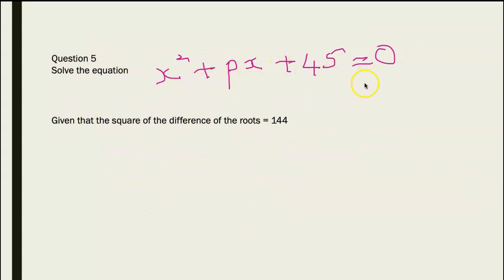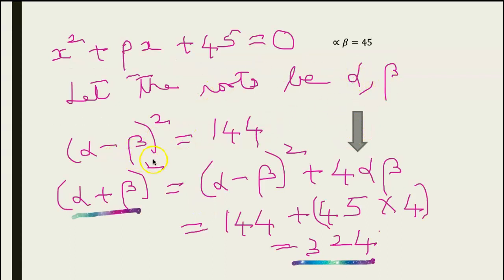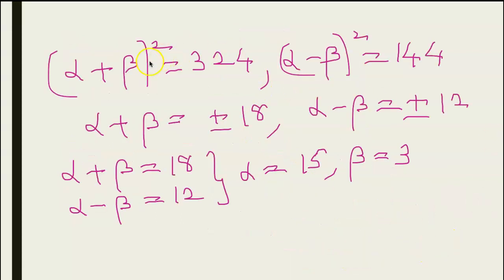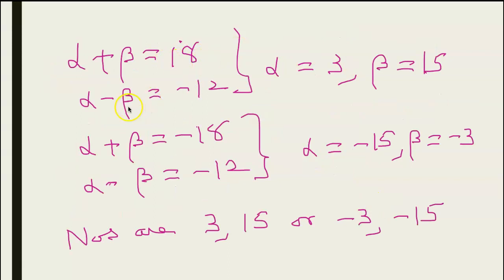Solve x² + px + 45 = 0, given that the square of the difference of the roots is 144. Let the roots be alpha and beta. So (alpha - beta)² = 144. Using (alpha + beta)² = (alpha - beta)² + 4×alpha×beta, we get (alpha + beta)² = 144 + 4×45 = 324. So alpha + beta = ±18 and alpha - beta = ±12. Solving the four cases, the roots are either 15 and 3, or -15 and -3.